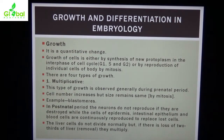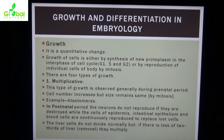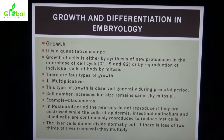In the postnatal period, neurons do not reproduce if they are destroyed, while cells of the epidermis, intestinal epithelium, and blood cells are continuously reproduced to replace lost cells. Liver cells do not divide normally, but if there is loss of two-thirds of the liver, they multiply.